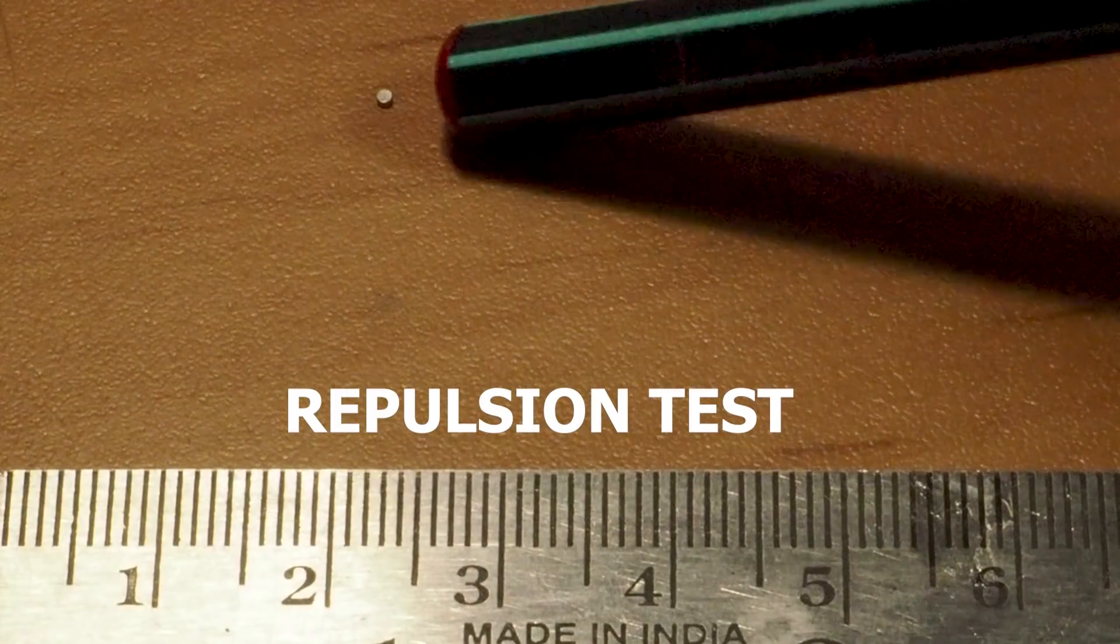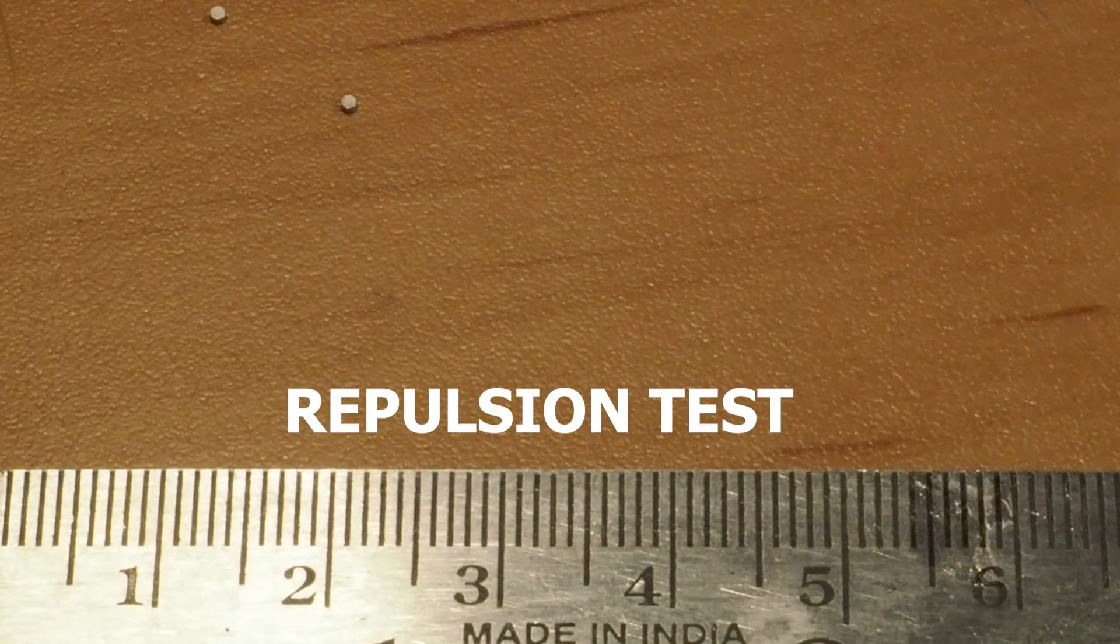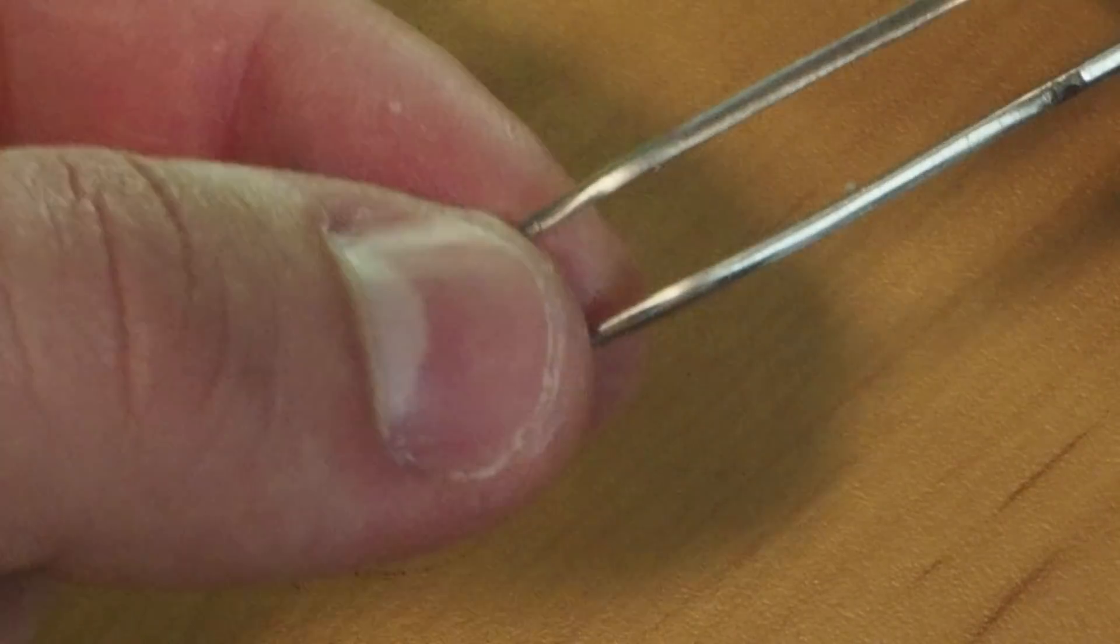For the repulsion test, I measure the distance of one centimeter between two of these magnets. Although it is super cool that we can manufacture magnets this size, they're a bit difficult to handle, and I think I lost at least five pieces while doing this video.